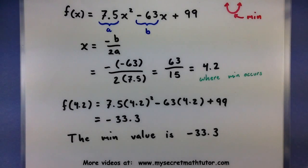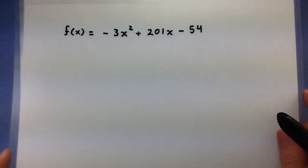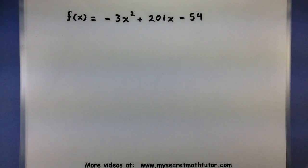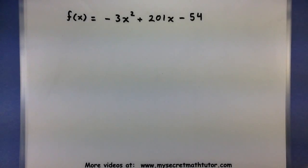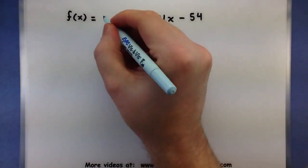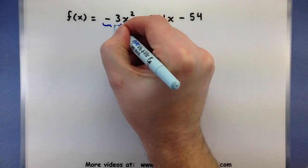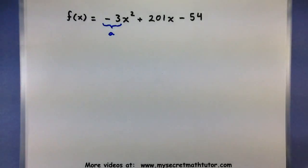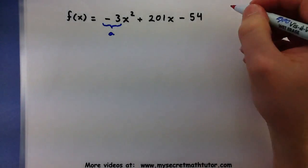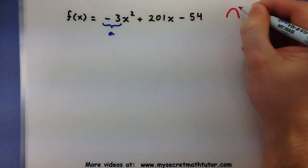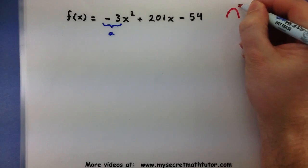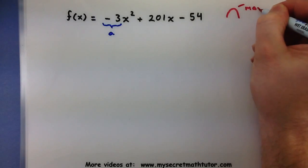Now we'll try it with negative 3x squared plus 201x minus 54. The very first thing I want to do is check that 'a' value. In this case, the 'a' value is negative, so my parabola is facing the other way, which means I have a maximum.